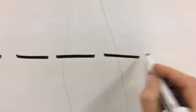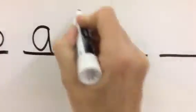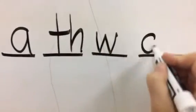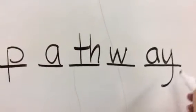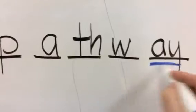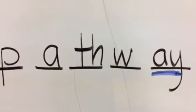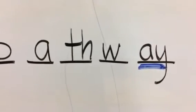Number three is pathway. P-A-T-H-W-A-Y. So in this case it is the A-Y because the A sound is found at the end of the word or syllable. So it's A-Y at the end to make the A sound.